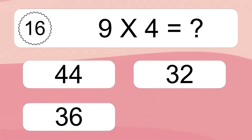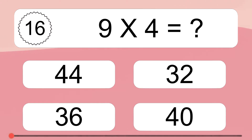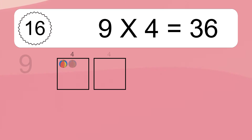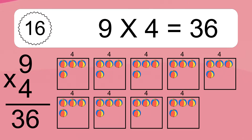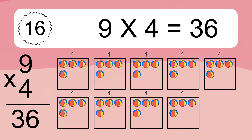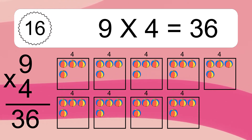9 times 4 equals what? 9 times 4 equals 36. We have 9 boxes, and each box has 4 colorful balls inside.